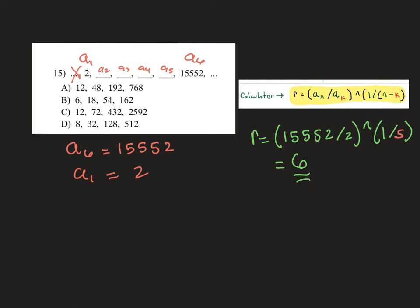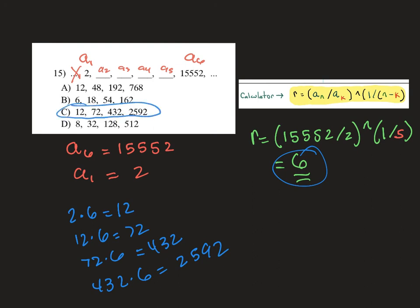That means to finish off this sequence, I just have to keep multiplying my terms by 6. To get A2, I do 2 times 6, which is 12. To get A3, I do 12 times 6, which is 72. To do A4, 72 times 6, which is, I think that's 432. And by now we know that our choice is letter C, but let's make sure 432 times 6, and that's going to be 2592, which is exactly what the choice says there. So by finding this common ratio, we can build the middle terms in starting at 2 and multiplying by 6 every time, and we get letter C for that one.